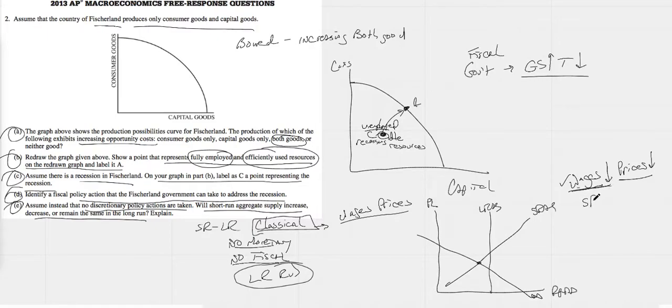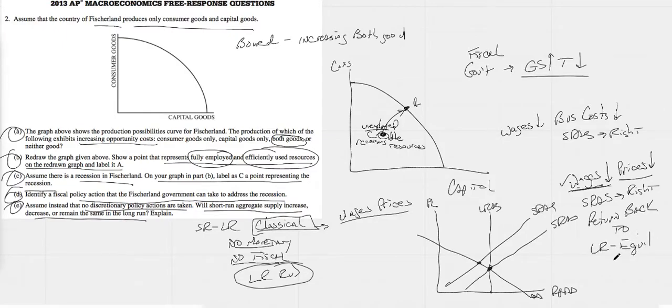When wages go down, how does that affect your short-run aggregate supply curve? Understand that when wages go down, this is business costs. If business costs go down, your short-run aggregate supply curve shifts to the right. So when wages and prices fall, short-run aggregate supply curve shifts to the right. Let's draw it in. It will go right back through that little point right there.